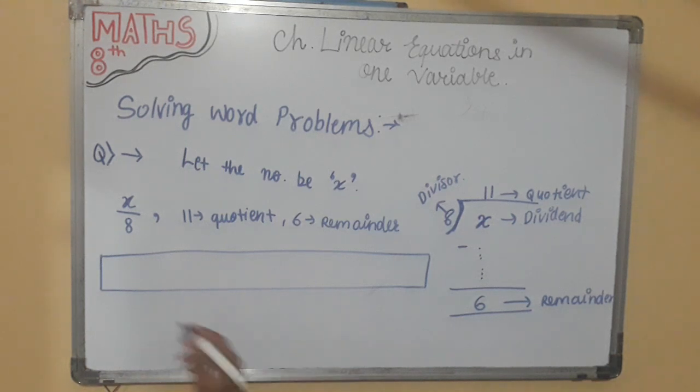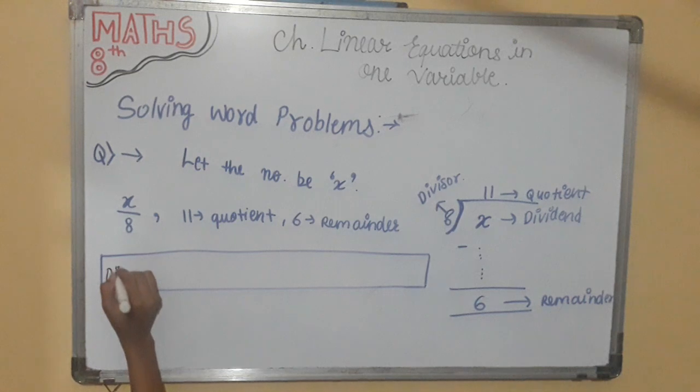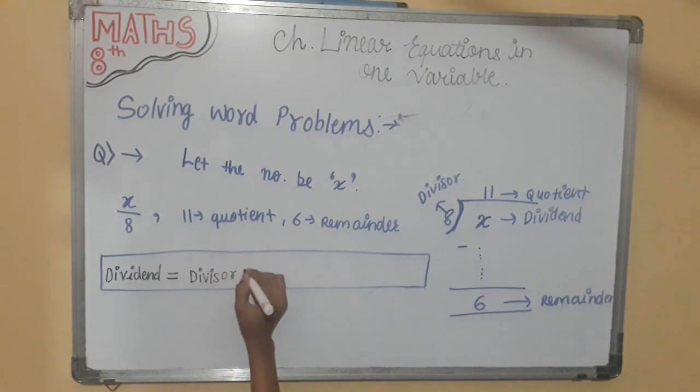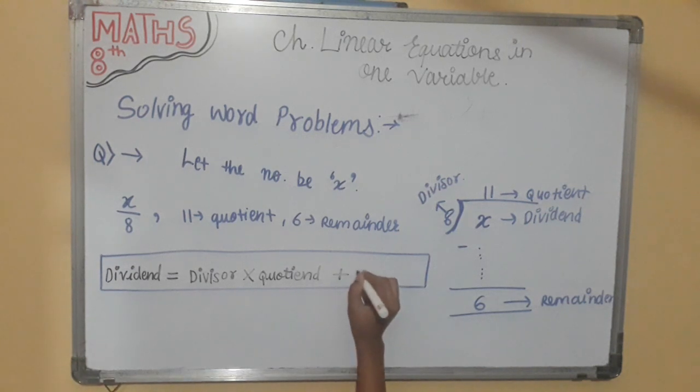That is, dividend is equal to divisor into quotient plus remainder.